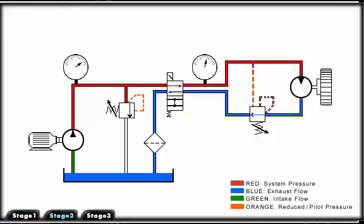When we de-energize the directional valve, remote pilot pressure is lost, allowing the valve to close.